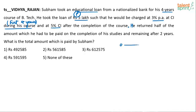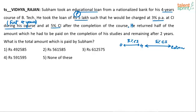So from 0 years to 4 years it is 3% compound interest, and from 4 years till the loan closure it is going to be 5% per annum compound interest. The principal is 5 lakhs.